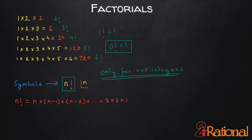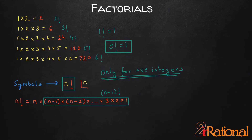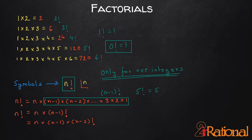Now n factorial can be written as the multiplication of n down to 1, and the part from 1 to n−1 represents (n−1) factorial. So n factorial can be written as n × (n−1)!. We can take it one step further and write it as n × (n−1) × (n−2)!. For example, 5 factorial can be written as 5 × 4! or as 5 × 4 × 3! and so on.